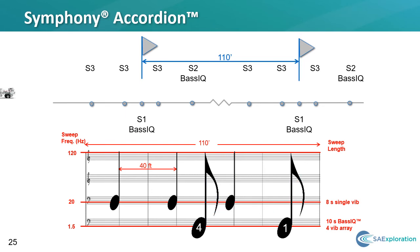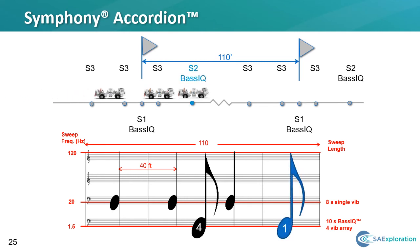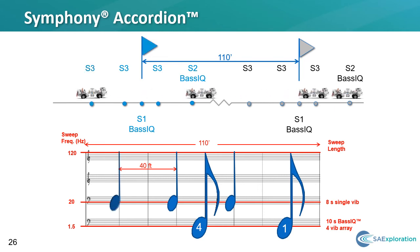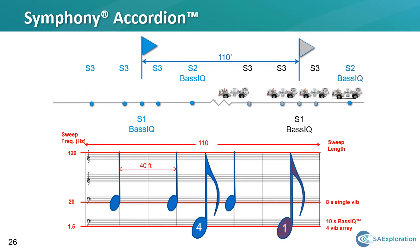Vibrator 1 moves to its sweep location and begins to shake sweep S2. As this is happening, the other vibrators are moving to their programmed locations. When Vibe 1 completes its sweep, vibrator 2 starts shaking sweep S3. Upon completion, all the vibrators are now in position to shake the four-vibrator low-dwell sweep, or sweep S1. When this is completed, vibrators 1 and 2 start to move to their next programmed locations. Meanwhile, vibrators 3 and 4 have started to acquire their sweep sequences and begin moving to their next locations. Vibrator 1 is now in position and has started the sequence all over again, acquiring the five VPs to complete the score of 10 source points over the 220-foot interval.